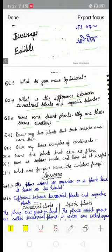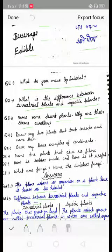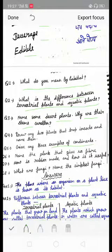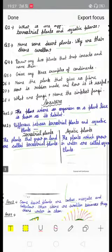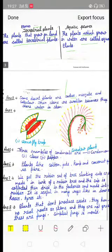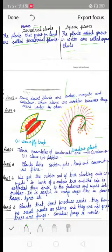Next question: give any three examples of condiments. Three examples of condiments are cardamom, clove, and pepper.